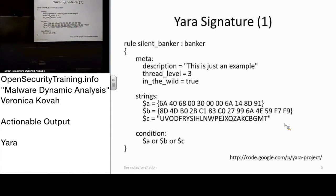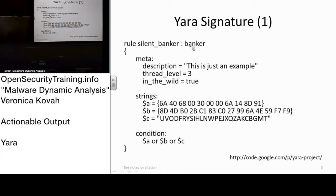A YARA rule looks like this: there is a rule keyword — that is the YARA keyword — followed by an identifier. You can put any name as the identifier. It can start with a letter or an underscore, but not a number. This part is for classification and grouping. You don't have to have the tag/grouping section, but you should have the identifier.